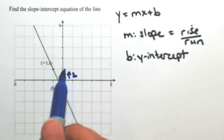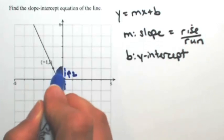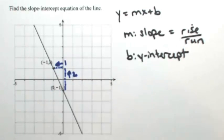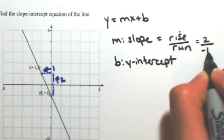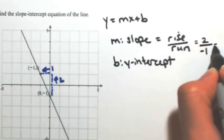And then from there to get to the other point, I've got to go left one. So this means that the rise was two and the run was negative one, so it's to the left. So the slope of this line is negative two.